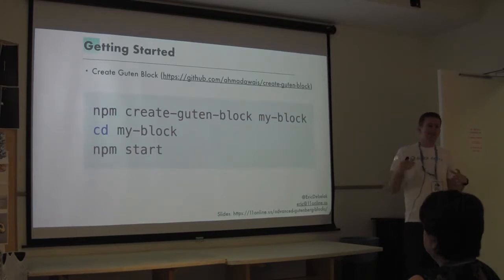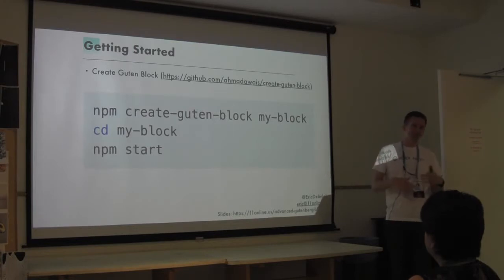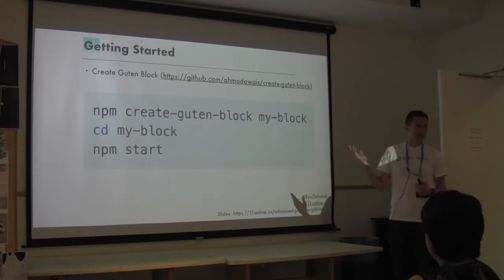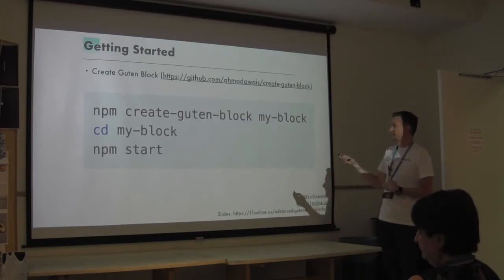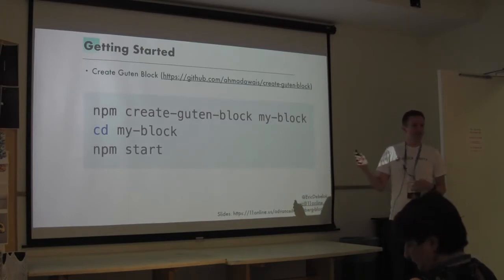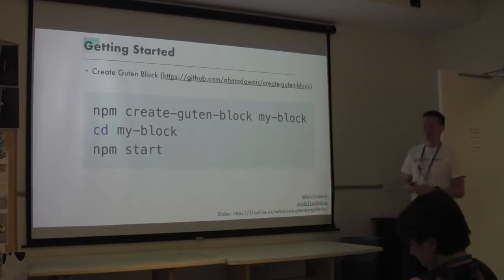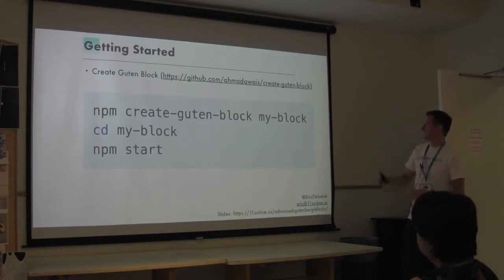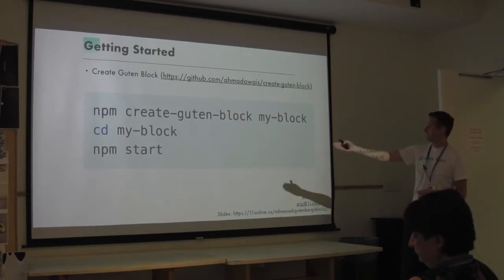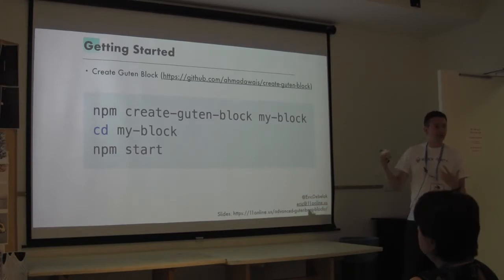A lot of React tooling is complicated because you have to compile everything and use webpack or Babel. But Create Gutenblock is a really useful tool because it does all that for you. Once you install it - is everybody familiar with NPM? NPM is the new world of WordPress. Once you have it installed, create Gutenblock, you name it, CD into it, and run start and it will run a watcher. As you make changes it will recompile your code as you go.